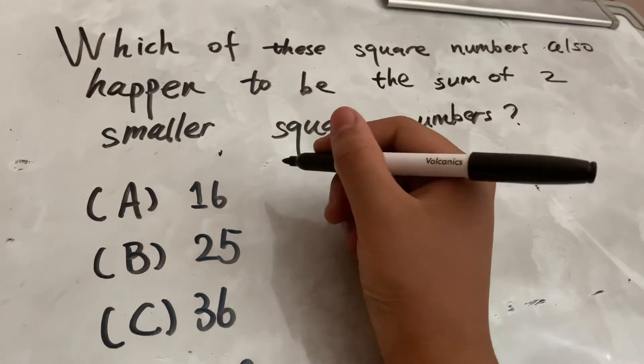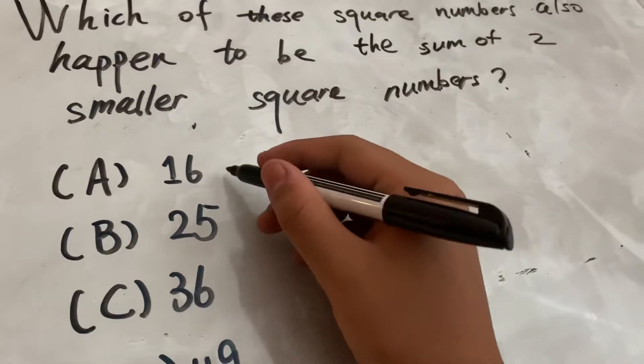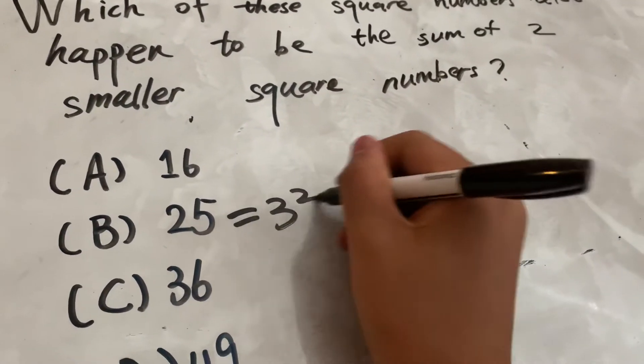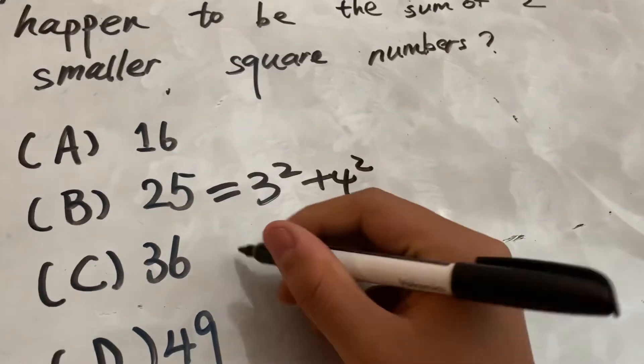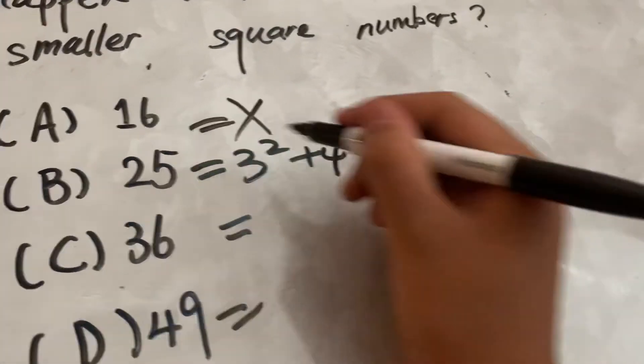This problem, which of the square numbers? So this cannot be. This, it is equal to 3 squared plus 4 squared. This is not, this is not, this is also not.